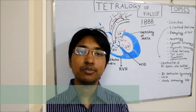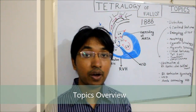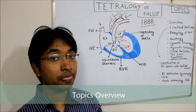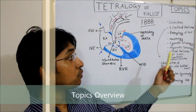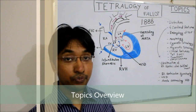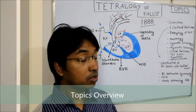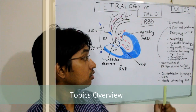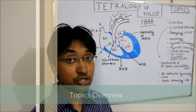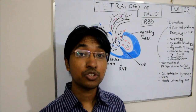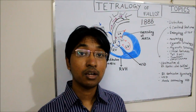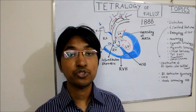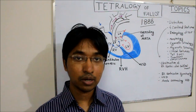In this video, we will try to define Tetralogy of Fallot, then discuss the four cardinal features, embryology, morphology, clinical features, tet spell, and treatment and complication of Tetralogy of Fallot.